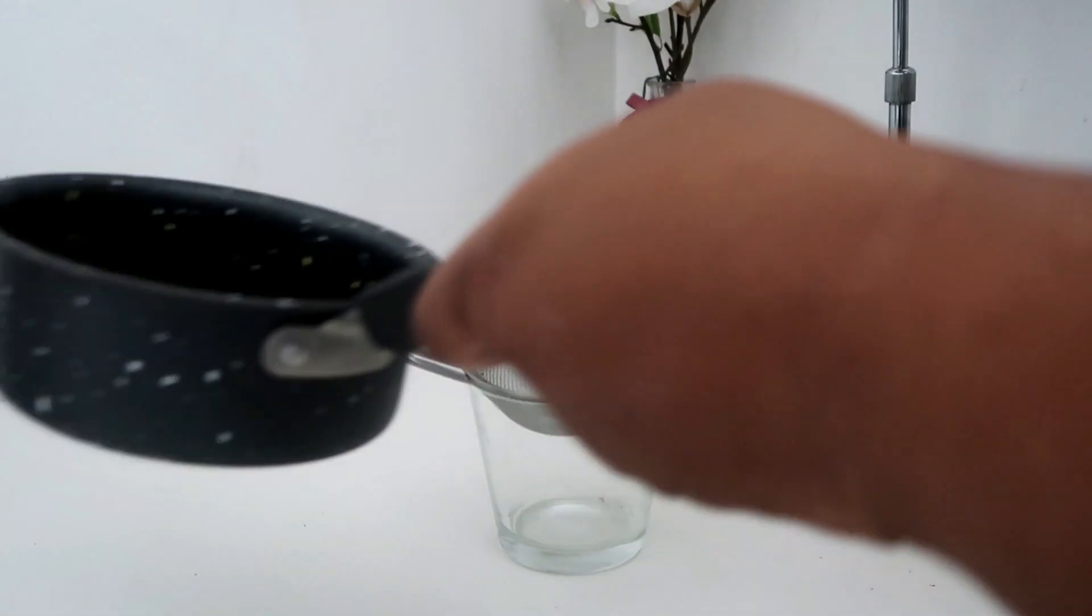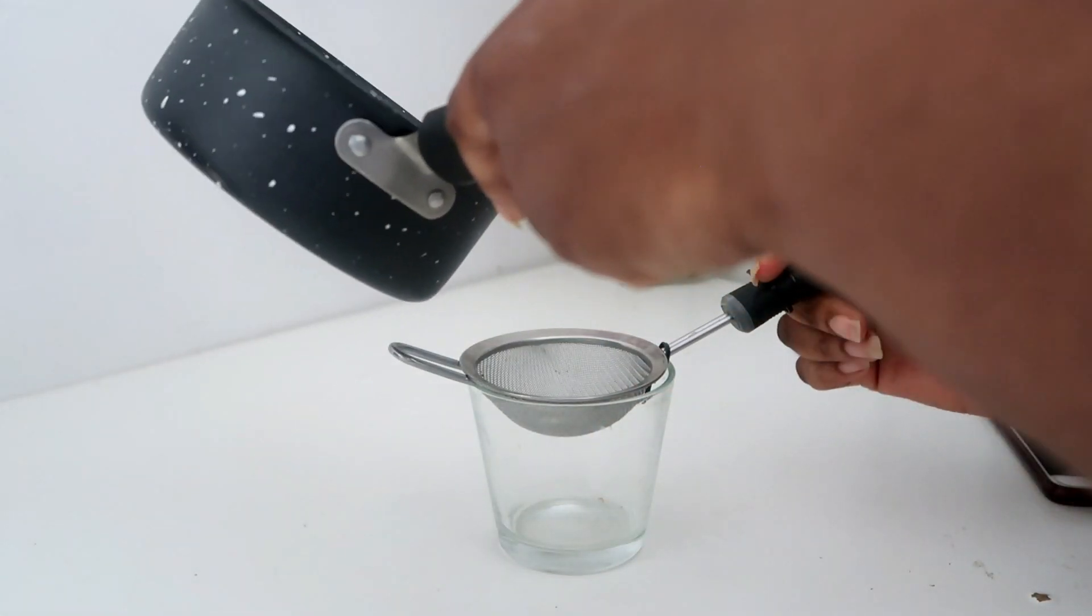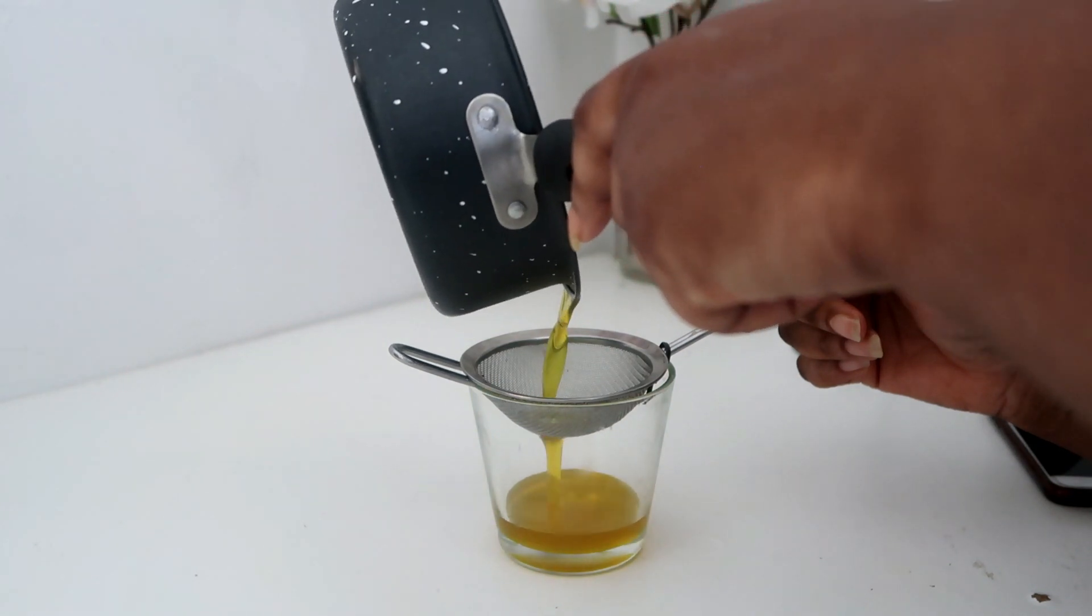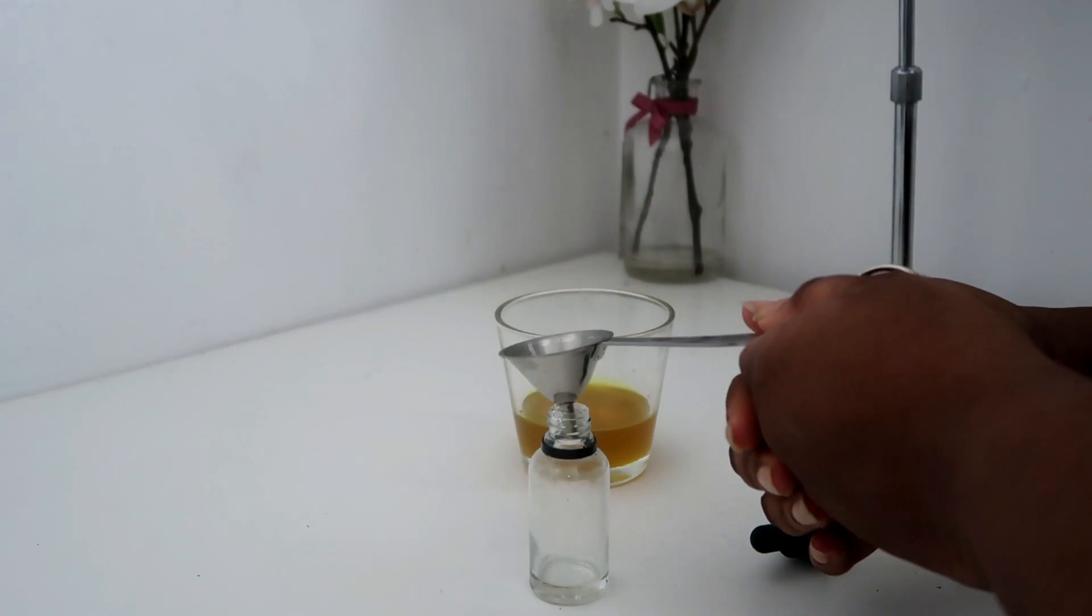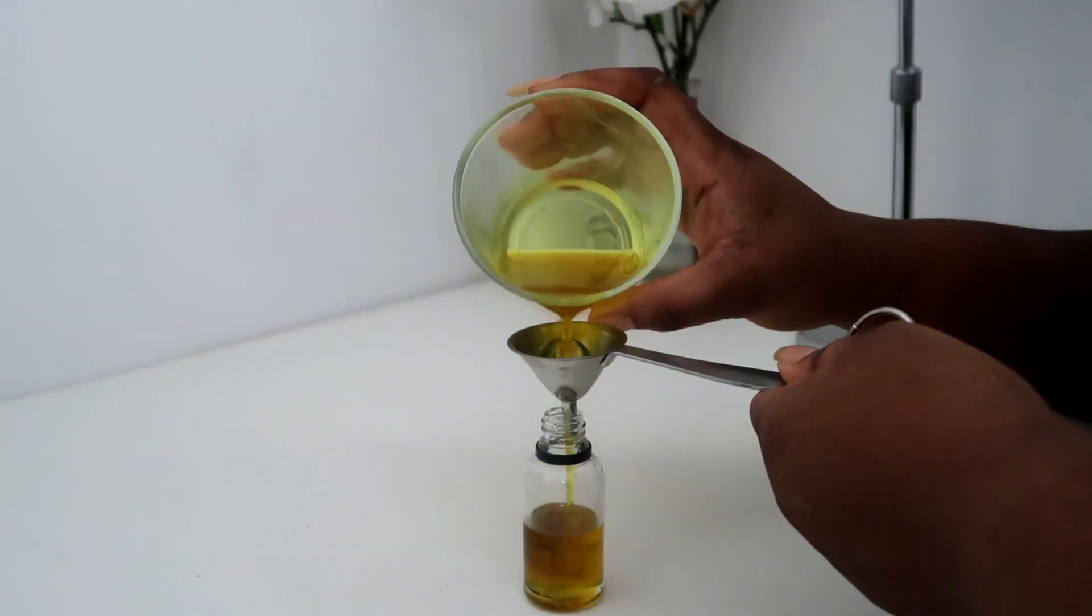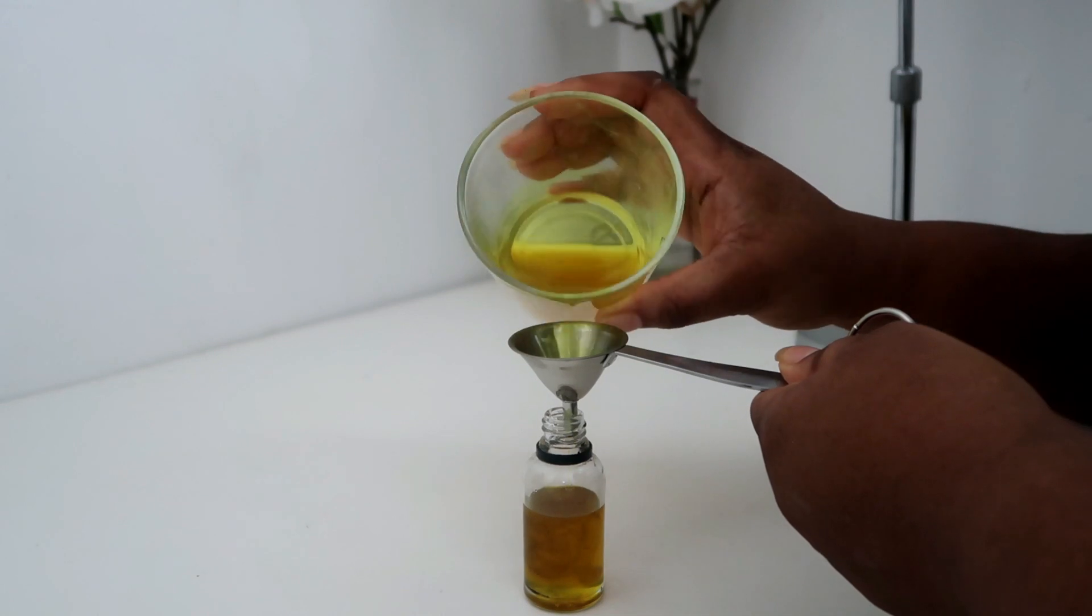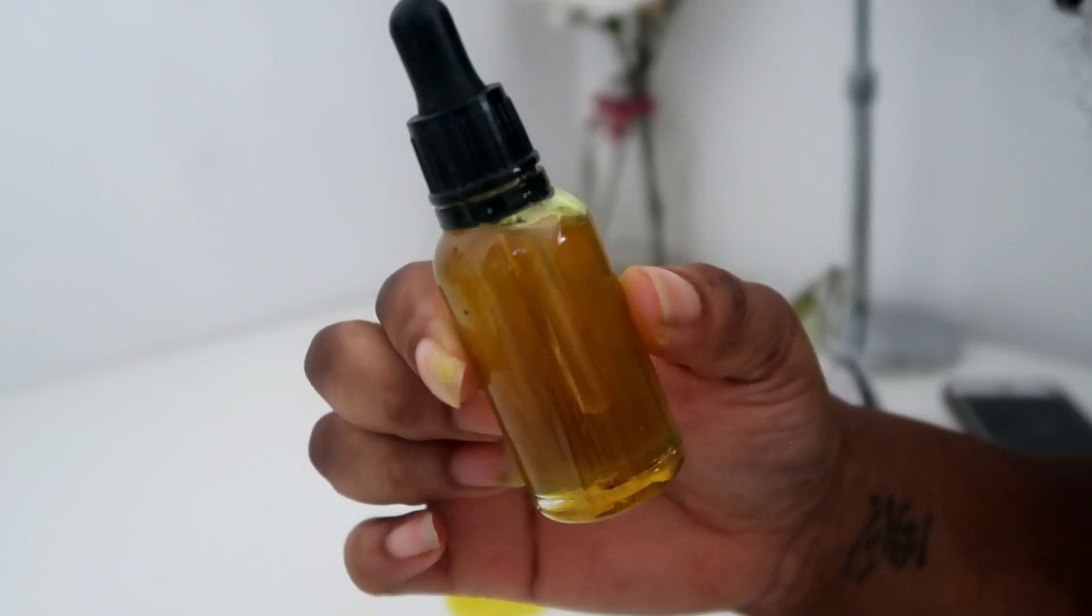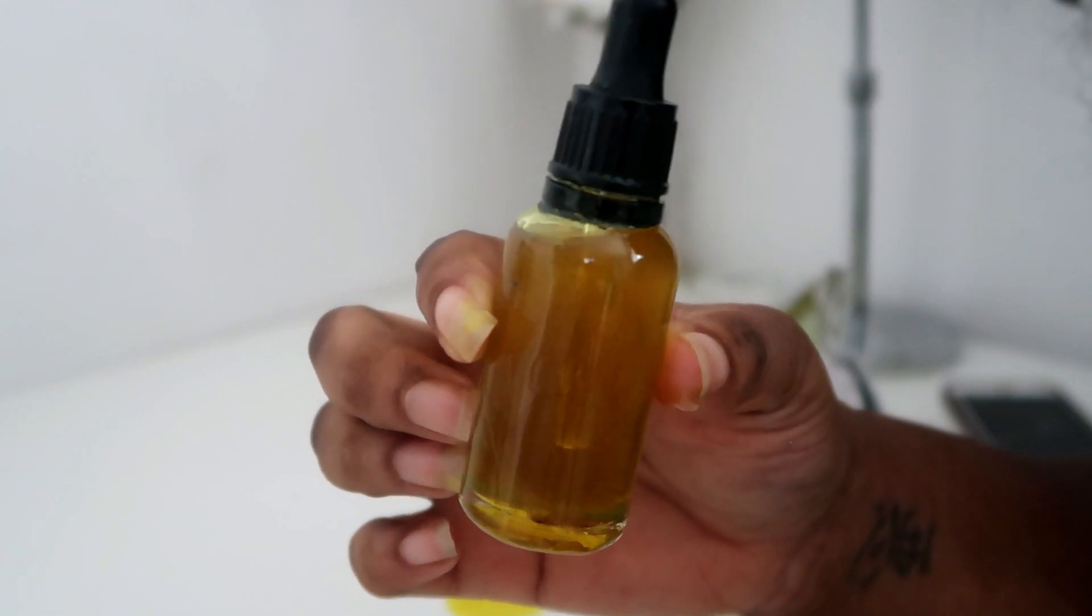I then pour out the oil through a strainer so that the big chunks don't fall into the oil. Next I just funnel the remainder of the oil into the glass applicator bottle and there you have it, turmeric oil from natural root. I hope you guys really enjoyed this video and I will see you in the next one. Bye!